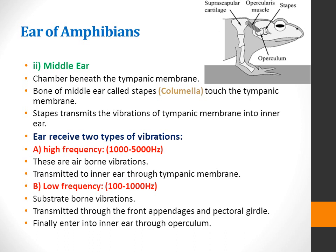The ear can receive two types of vibrations. The first are high frequency vibrations ranging from 1000 to 5000 Hz, which are airborne vibrations transmitted to the inner ear through the tympanic membrane. The second are low frequency vibrations ranging from 100 to 1000 Hz, which are substrate-borne vibrations transmitted through the front appendages and pectoral girdle, finally entering the inner ear through the operculum.